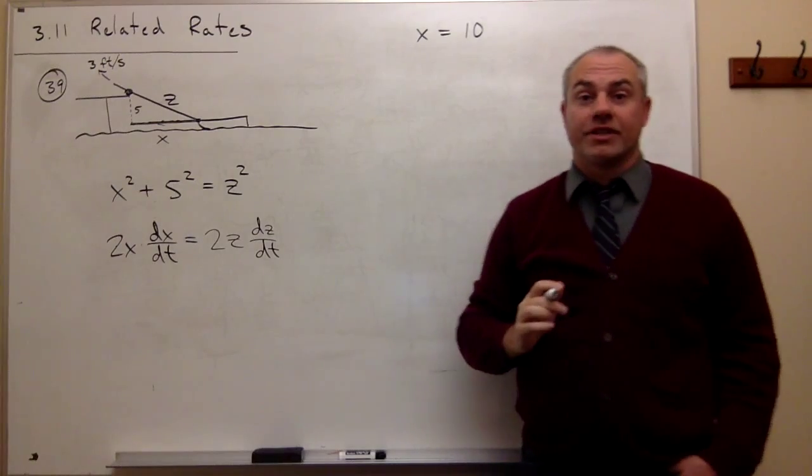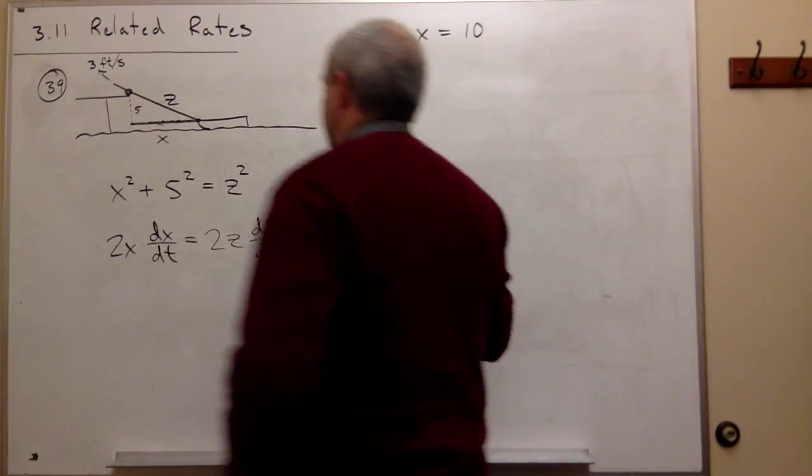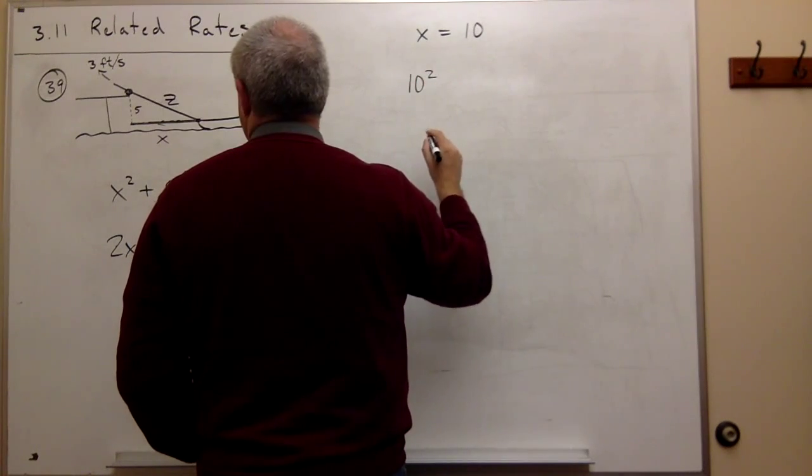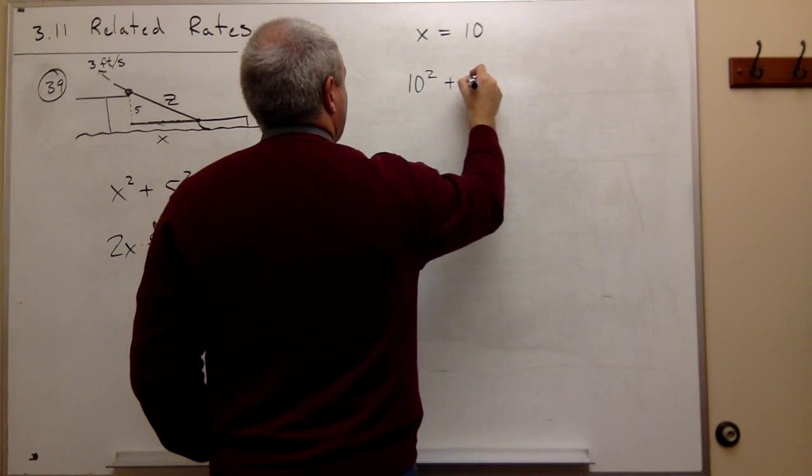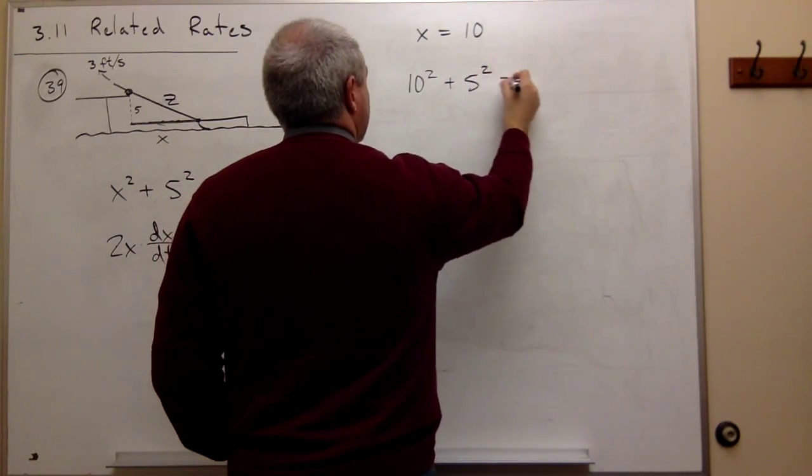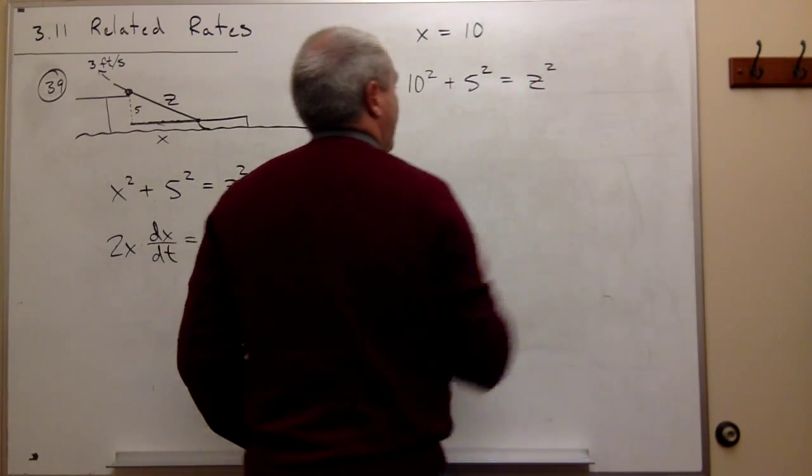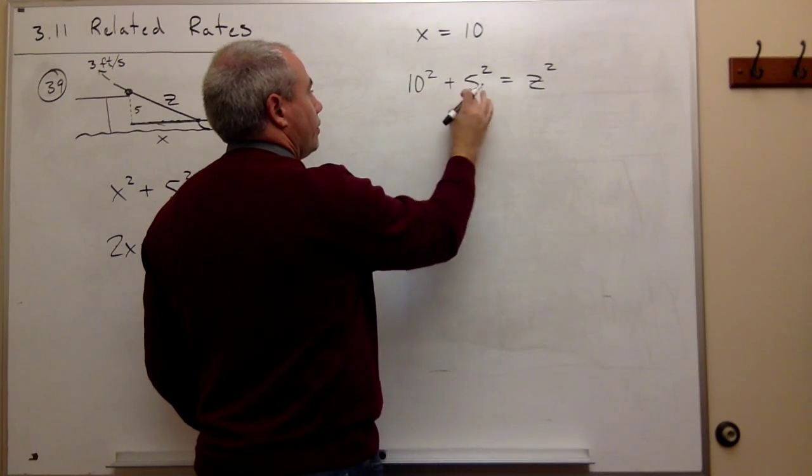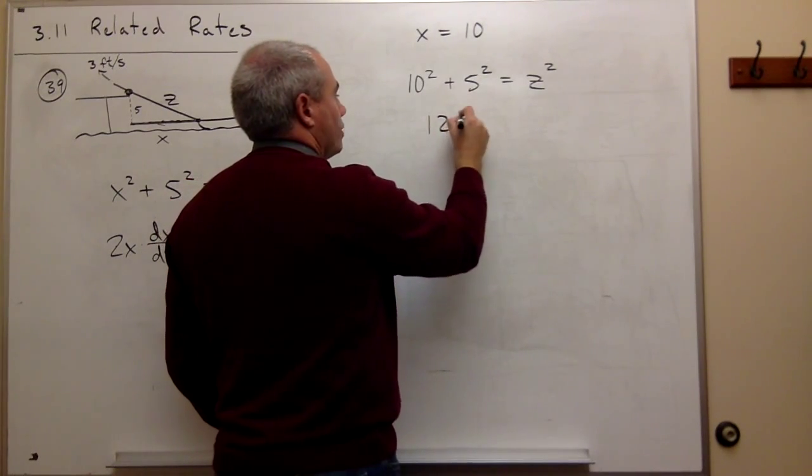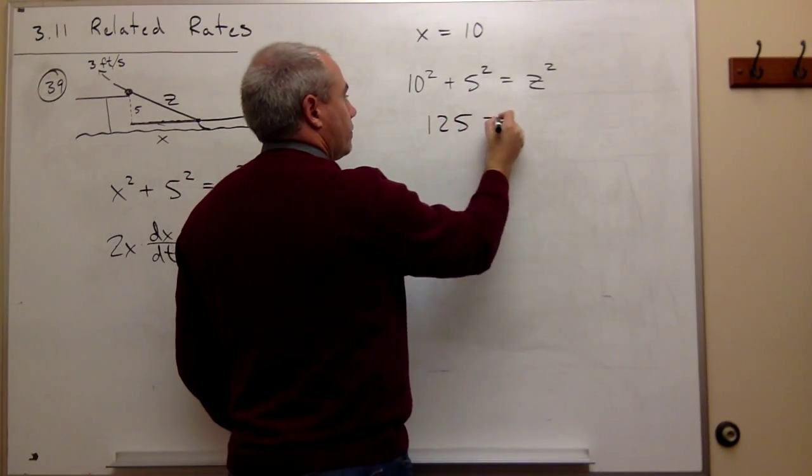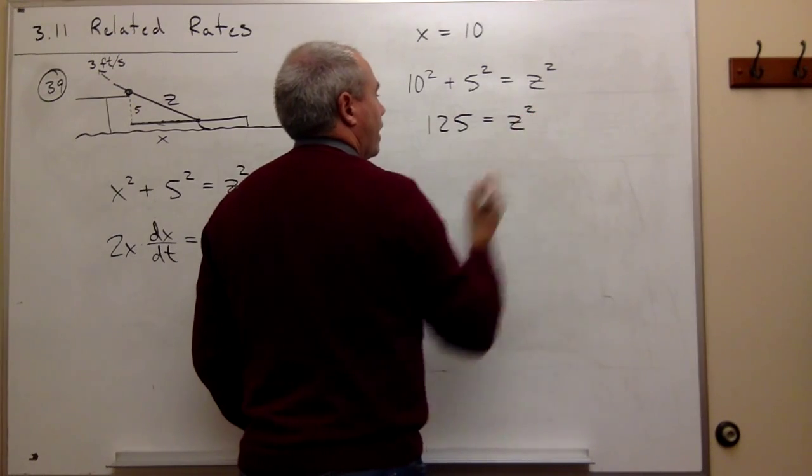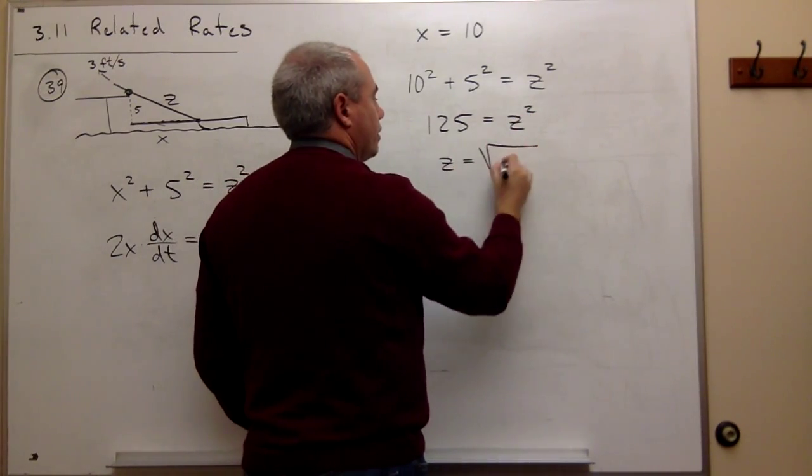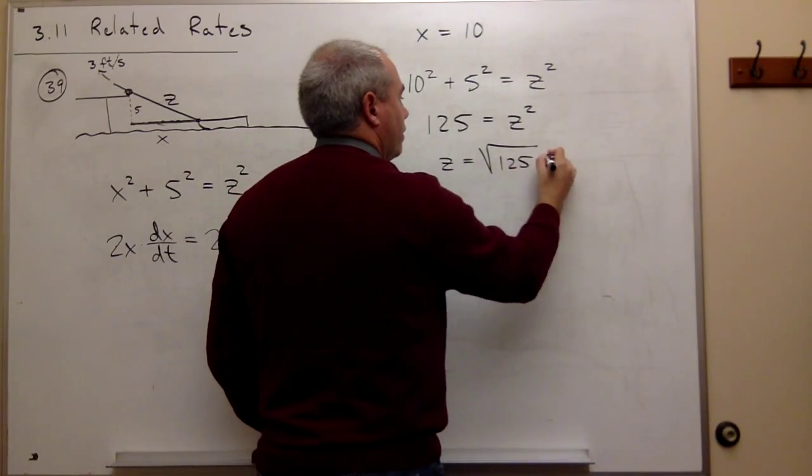Let's figure that out. If x is 10, I get 10² + 5² = z². In other words, we get 100 + 25, so 125 = z².